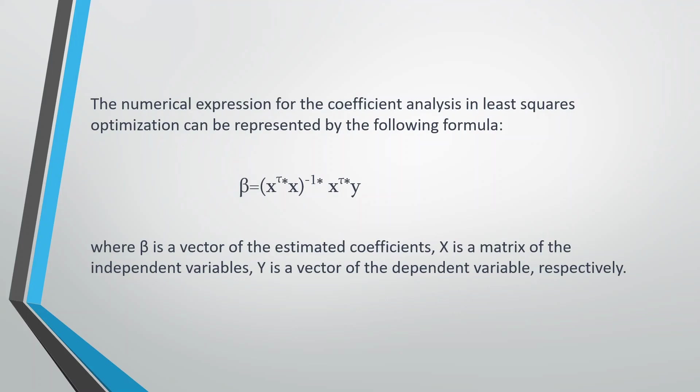The numerical expression for the coefficient analysis in least square optimization can be represented by the following formula: beta is equal to (X-transpose * X) whole inverse into X-transpose into y.